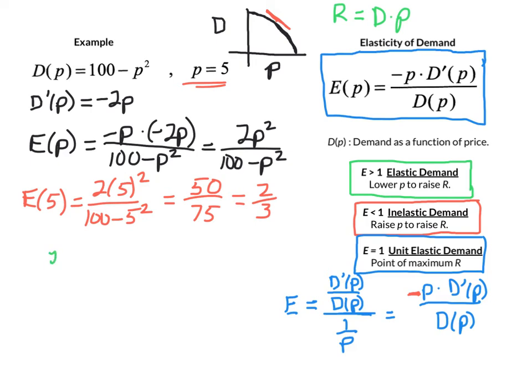Just to kind of wrap up our thought here, let's just look at another scenario. If it was the same function, but our market price was at $8, then the elasticity at 8 would be 2 times 8 squared divided by 100 minus 8 squared. And so there we see we have an elasticity of 128 divided by 36, which is 3.5 repeating. But it's definitely greater than 1. So that would be an example of an elastic market. So it's saying that the optimal price here somewhere is between $5 and $8.